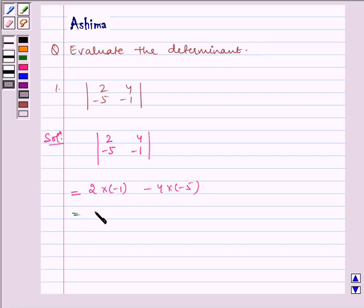Which is equal to minus 2 plus 20 which is equal to 18. Therefore, the required answer is 18.